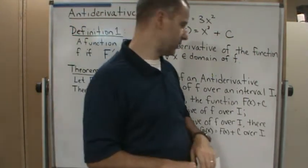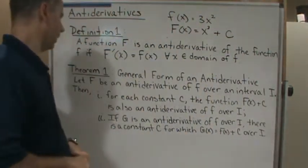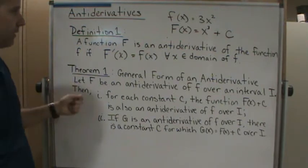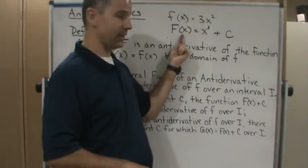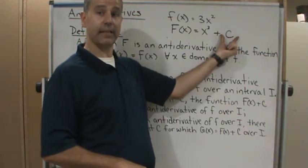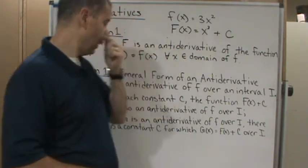Okay, so that brings us to the general form. This one is about the general form of an antiderivative because we can take any two antiderivatives, and we can subtract them, and they'll only be different by a constant.